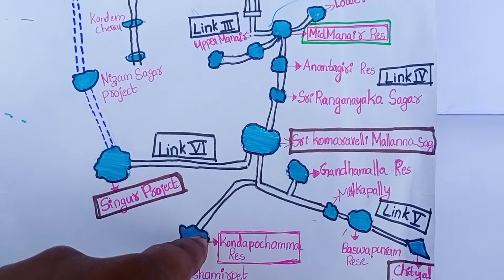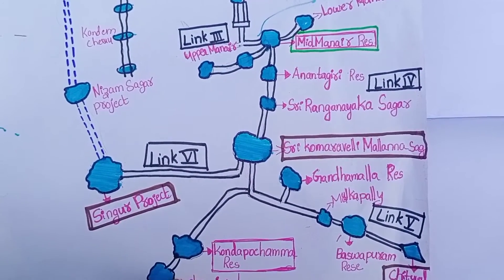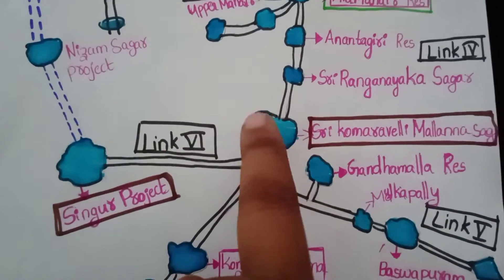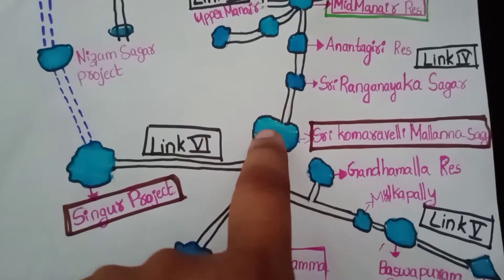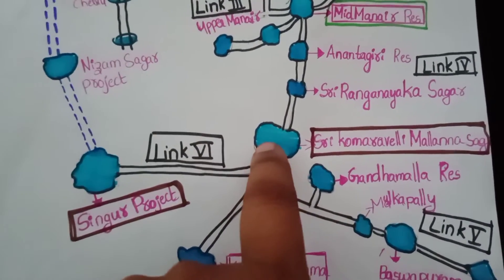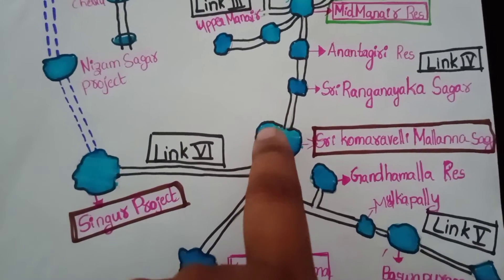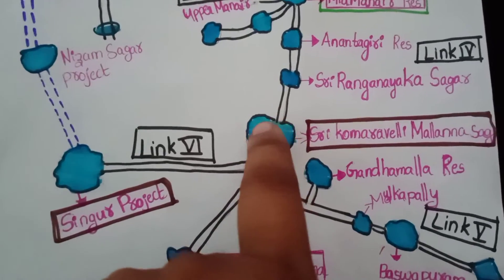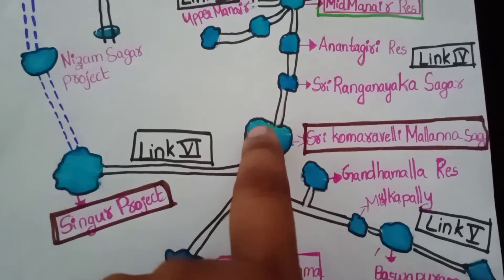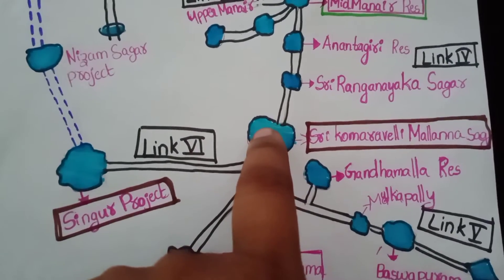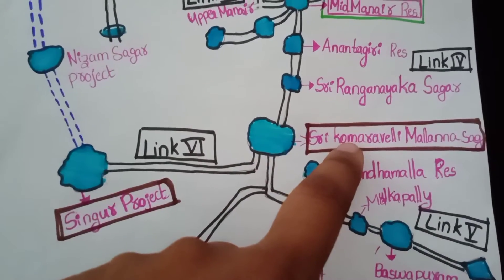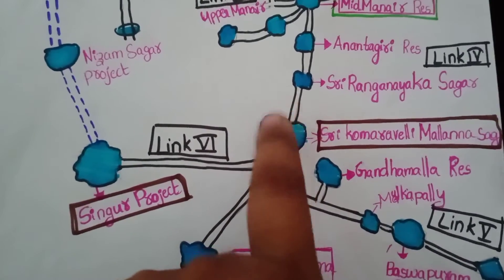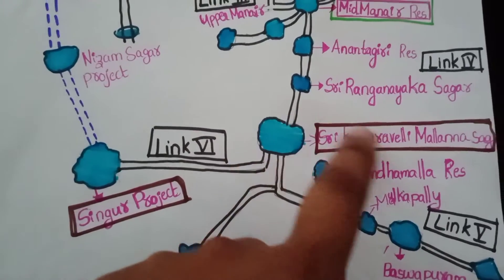Through this canal, water flows from Kondopochamma to Shamirepet, and from Shamirepet to Hydra 4. The main point here is Sri Kumraveli Mallana Sagar Reservoir, which is the largest reservoir in the Kaleshwaram project, located near Matrajpalli, near Gajwel. Among the 20 reservoirs in the Kaleshwaram project, this is the biggest.